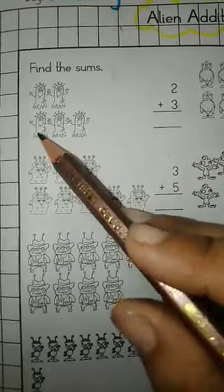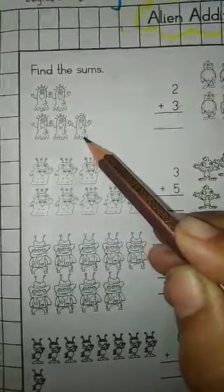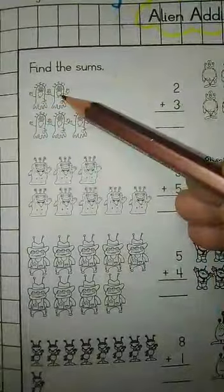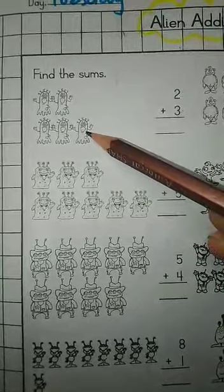Now count these aliens. One, two, three. How many all together? Count them. One, two, three, four, five.